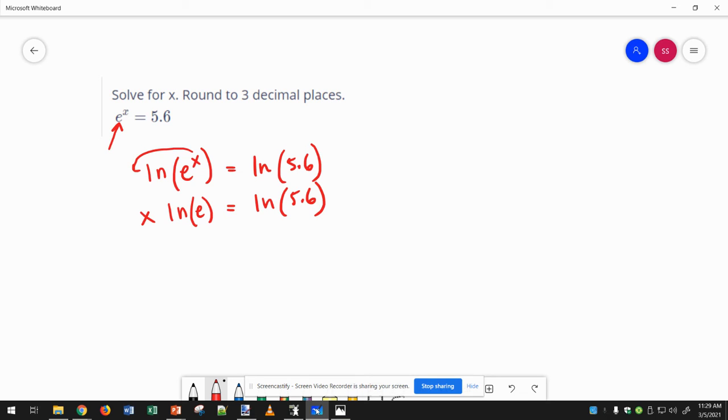Natural log of E is equal to 1. That's why we use natural log with problems with E, because they are inverses of each other. They cancel each other out. So it's just like X times 1, it's just X.